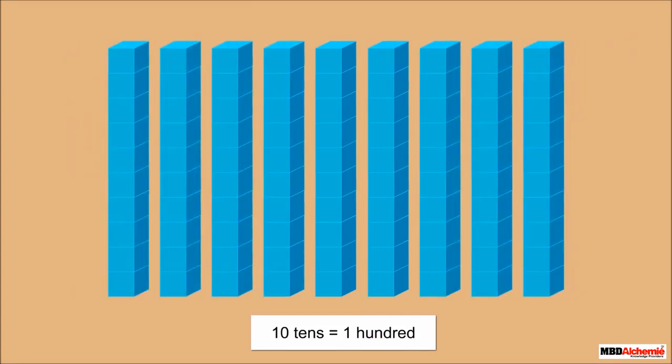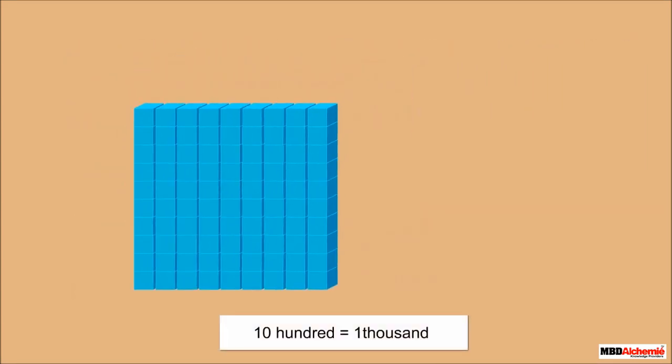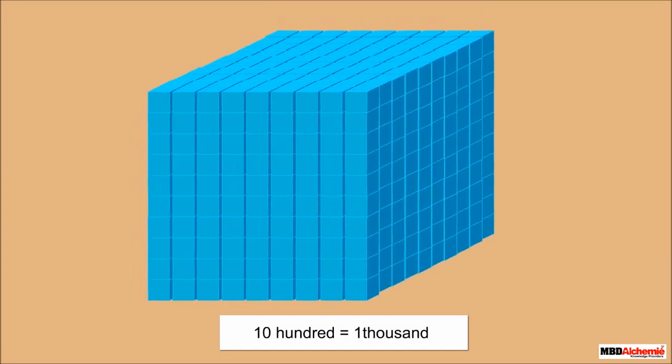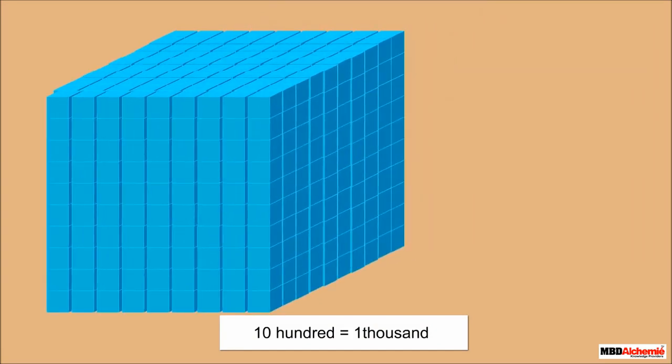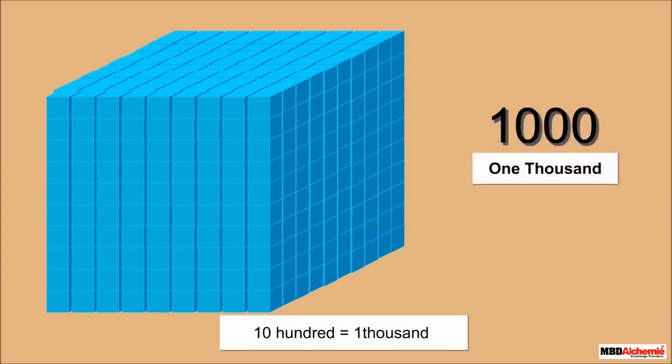So ten hundreds make one thousand. It is a new number. It is written as one followed by three zeros. It is read as one thousand. Thousand is a place that comes after hundred. It is the first four-digit number.